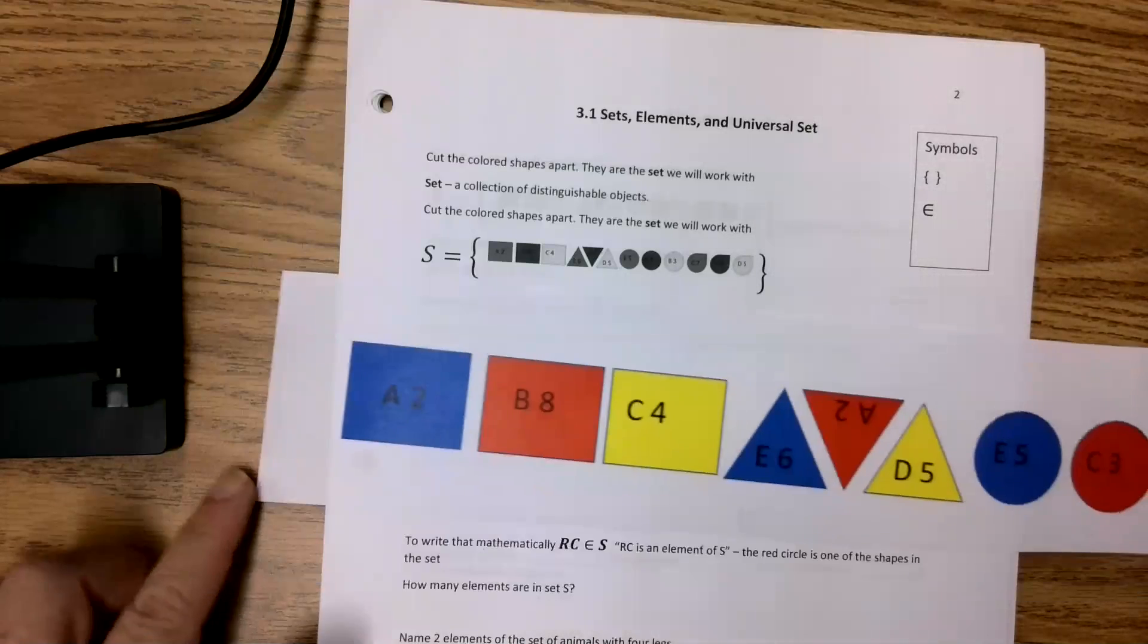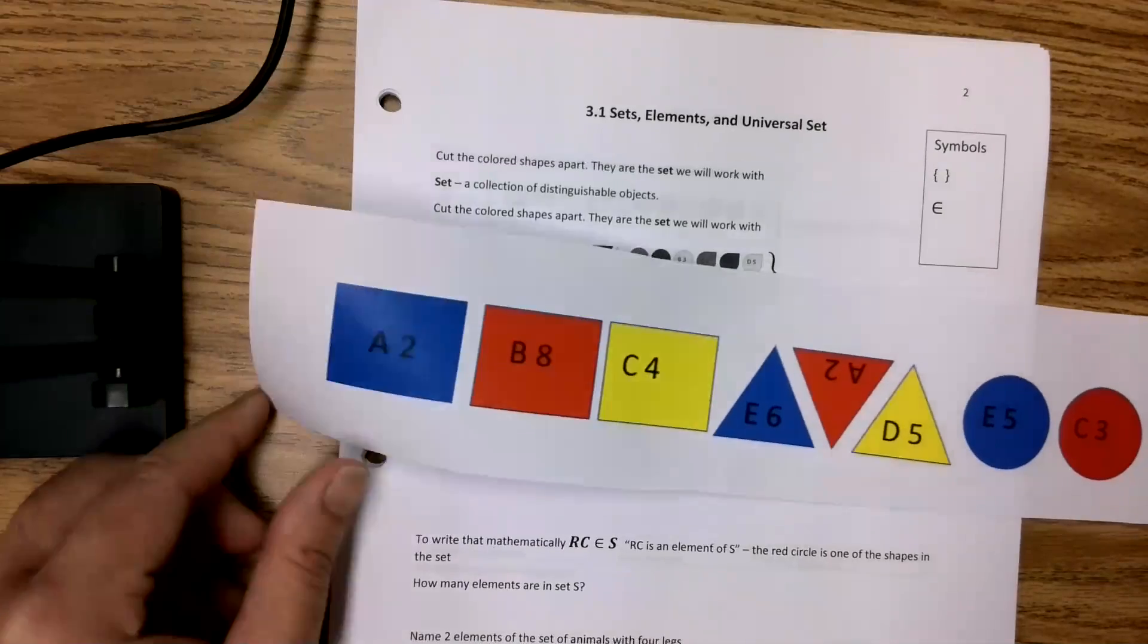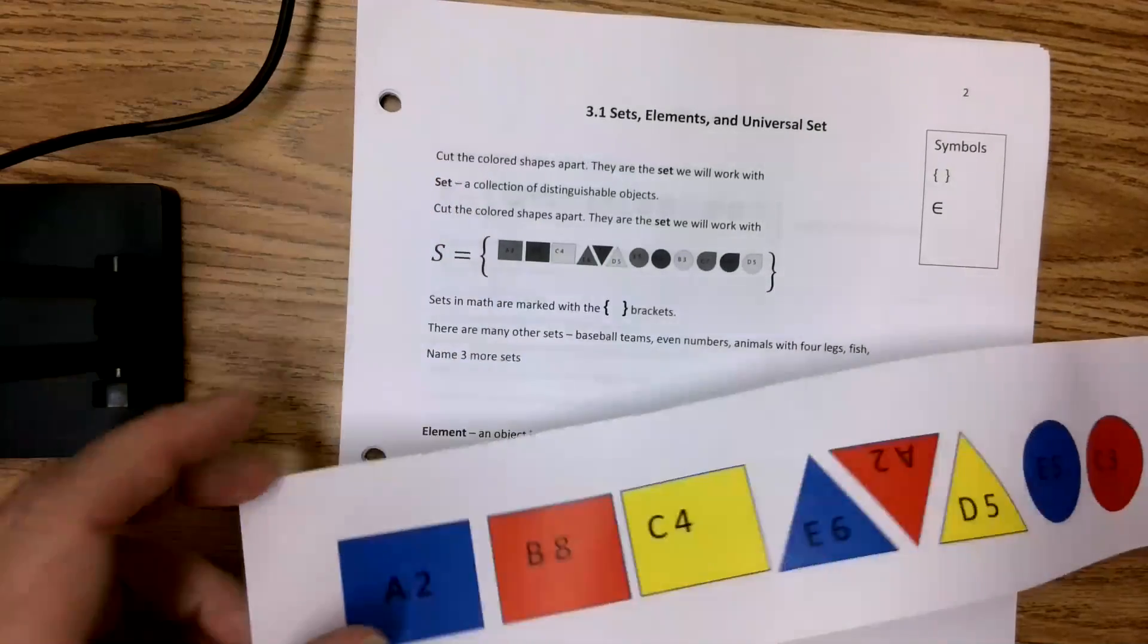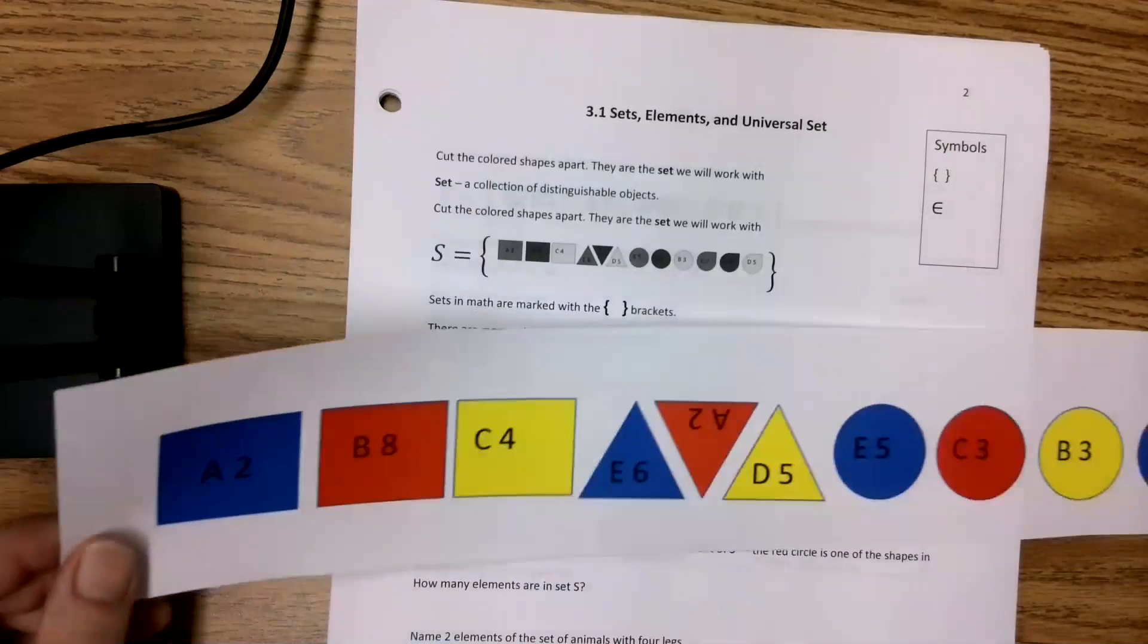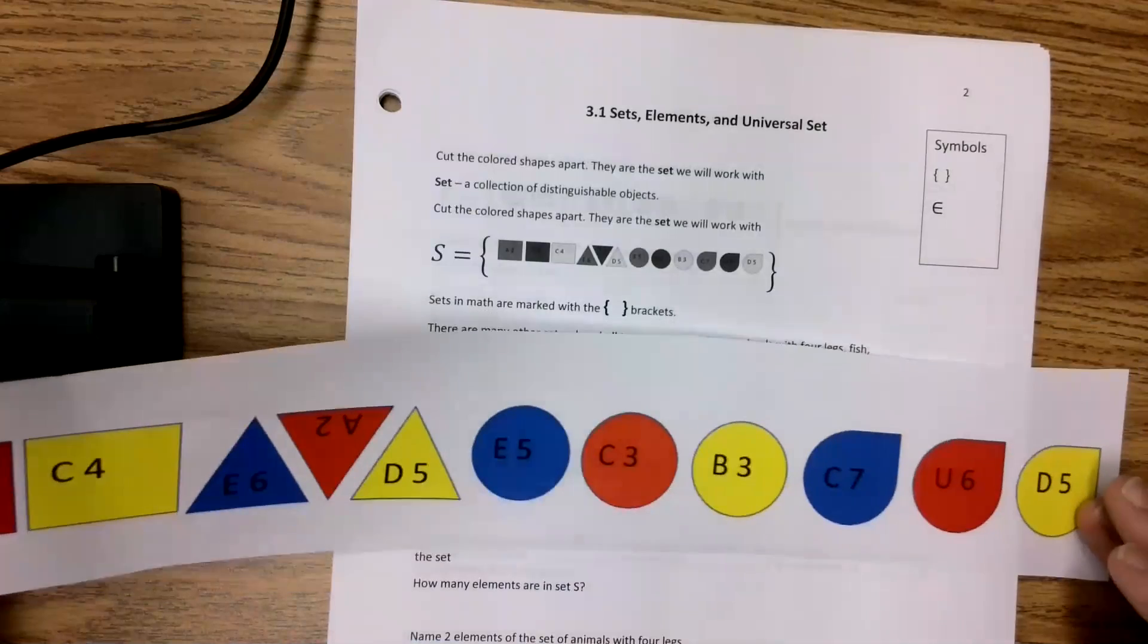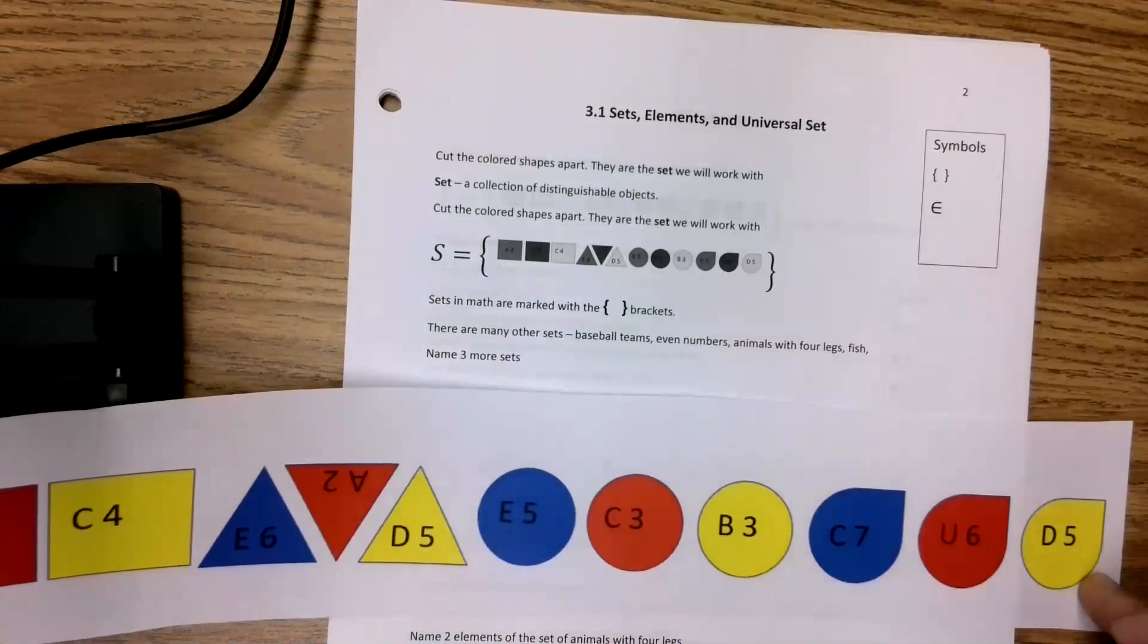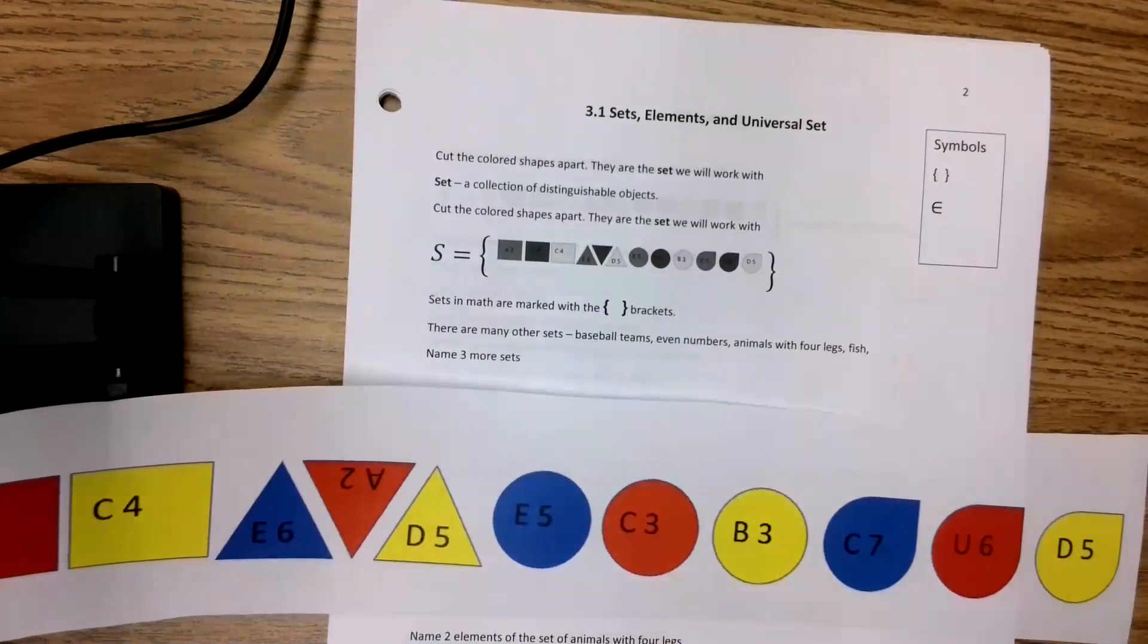All right. So to get started, you should have a strip of paper with all of these pretty shapes on it. We've got different shapes, different colors, different things written on them. It's the same one that's there, but this one's pretty in color and I would ask you to cut them out.